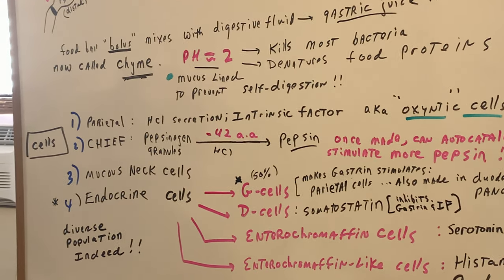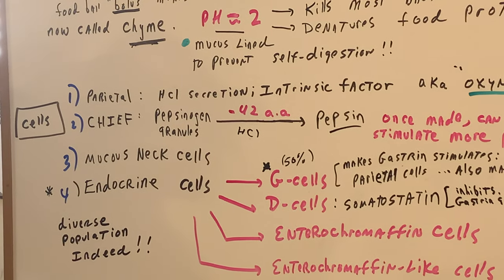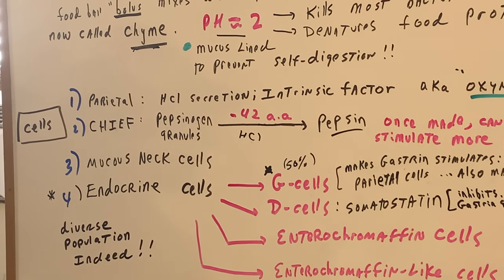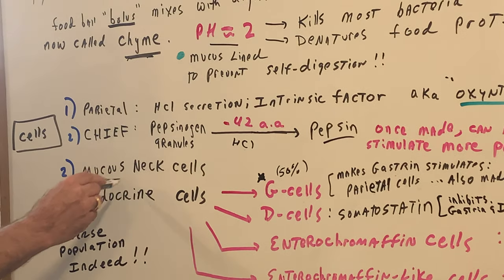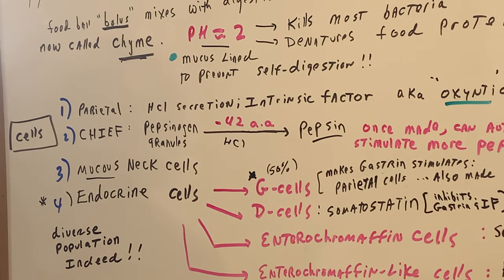Now mucus neck cells. Not goblet cells. You see a lot of textbooks call them goblet cells, that's in the small intestine mainly, but we call them mucus neck cells. They're going to make the mucus.